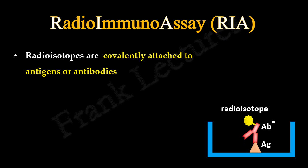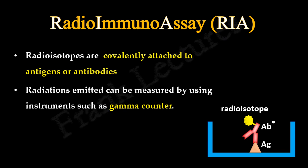In radioimmunoassay, the antigens or antibodies are labeled with radioisotopes. Radioisotopes emit radiations, which can be detected and measured using specialized instruments such as a gamma counter. The most popular radioisotope used as a tag is iodine-125.